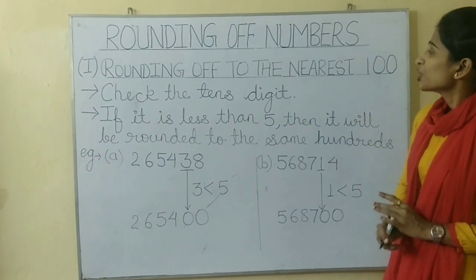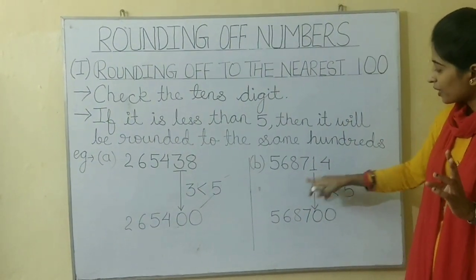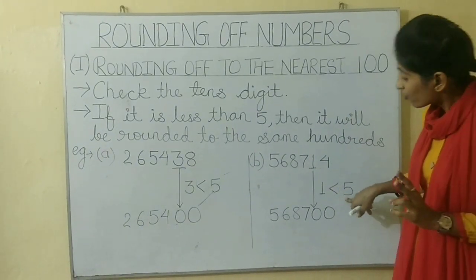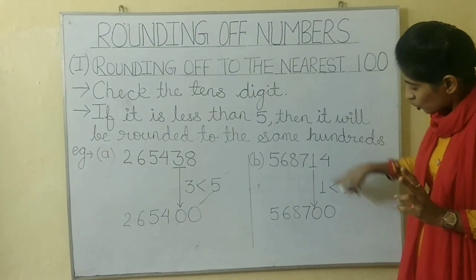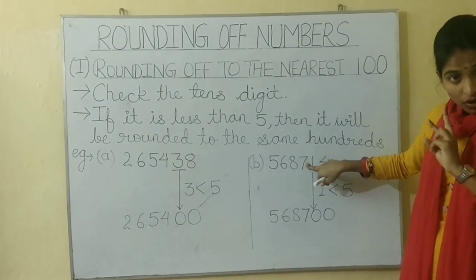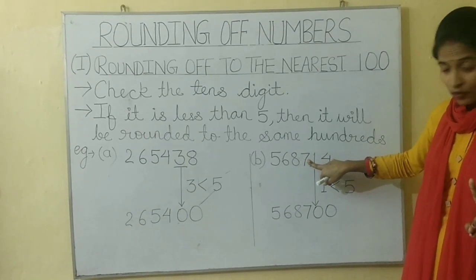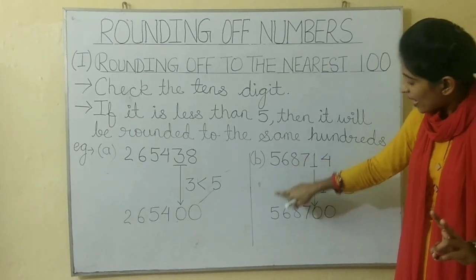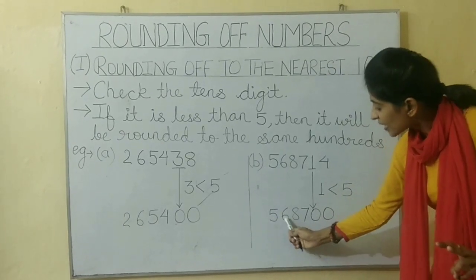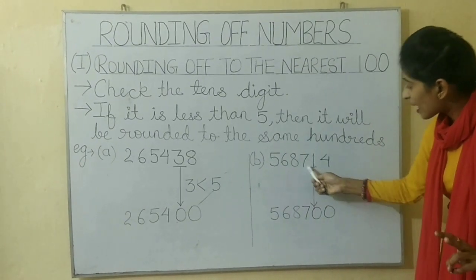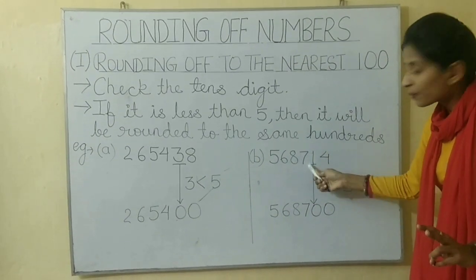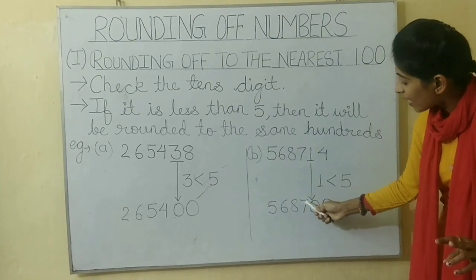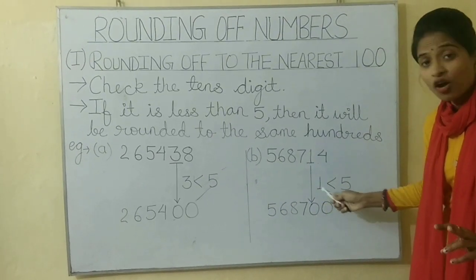Children, now look at the second example. Here also the ten's digit 1 is less than 5, so the hundred's digit will remain the same — it will remain 7. So the answer will be 568700.